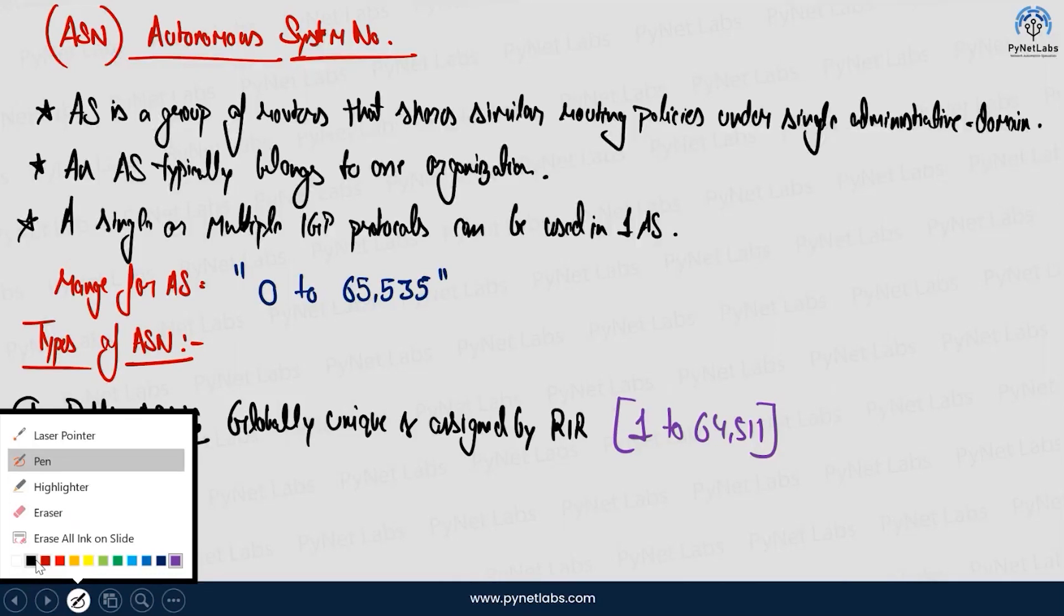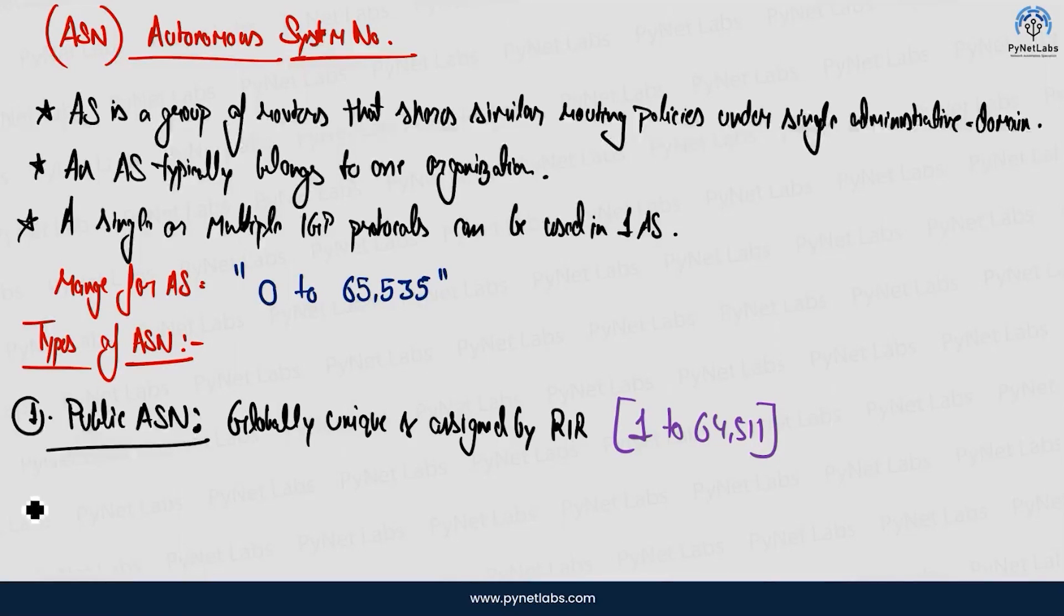And talking about the range, which is your private ASN, which is your private ASN, so when I do talk about the private ASN, private ASN is something that I already mentioned the point previously that ASN was initially 16-bit value.